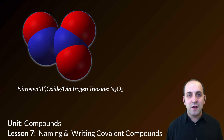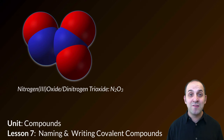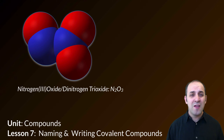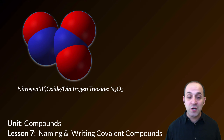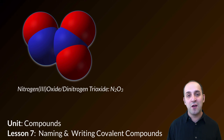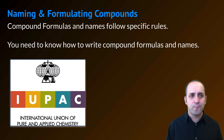Hi and welcome to Lesson 7 here in our Compounds Unit. In Lesson 7 we're going to talk about how to figure out the names and formulas of covalent compounds. Lessons 5 and 6 dealt with ionic compounds, and if you haven't watched those yet you really should before going through this lesson. Our example covalent compound here is dinitrogen trioxide, also known as N2O3. Let's talk about how this was figured out.